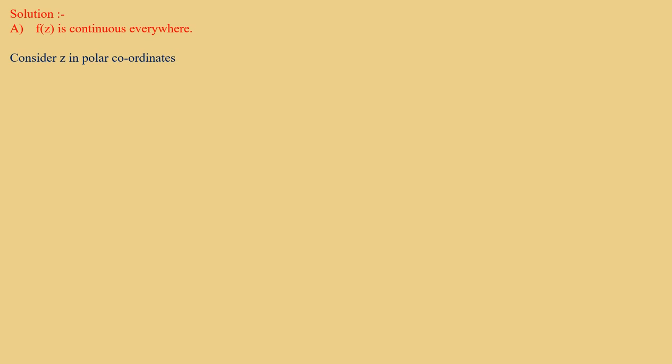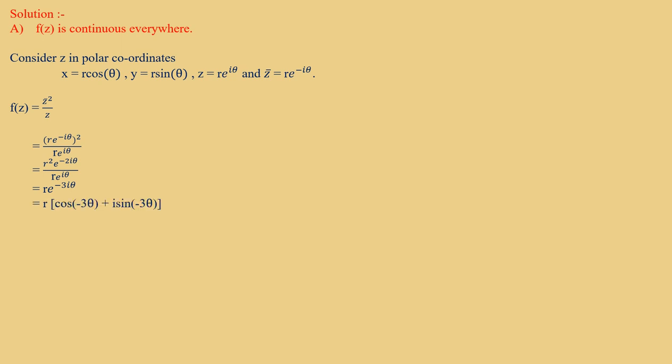Solution. For Option A — F(z) is continuous everywhere. Consider z in polar coordinates: x = r cosθ, y = r sinθ, z = r e^{iθ}, and z̄ = r e^{-iθ}. Then F(z) = r e^{-iθ} whole square divided by r e^{iθ}, which equals r² e^{-2iθ} / (r e^{iθ}) = r e^{-3iθ}, giving us r cos(3θ) − ir sin(3θ).